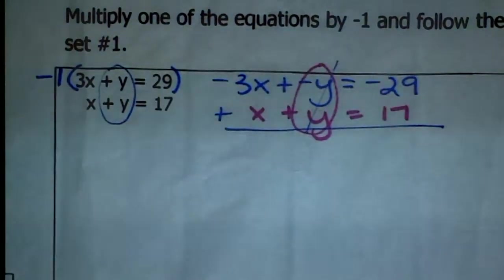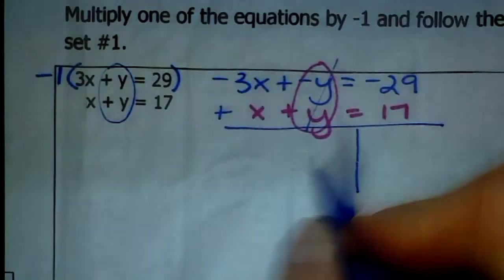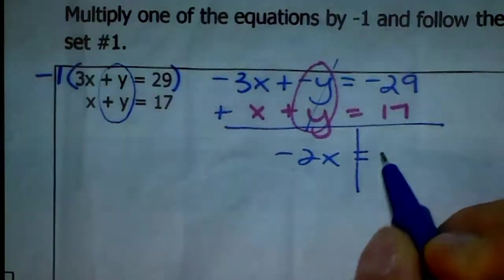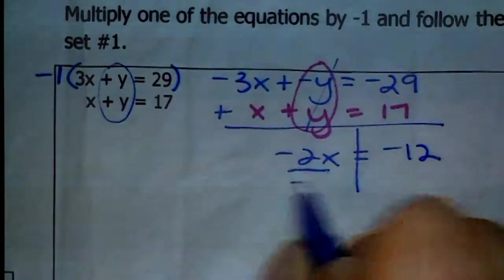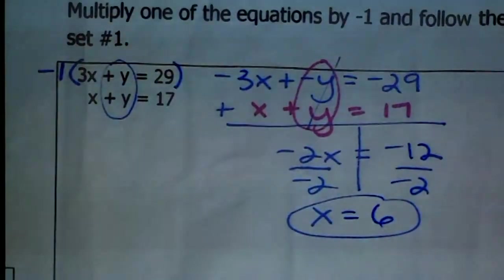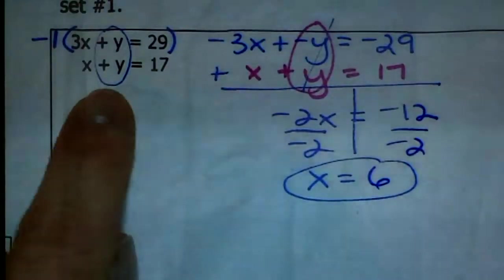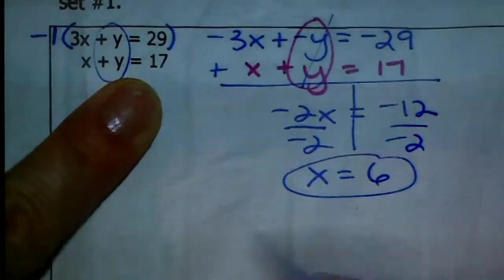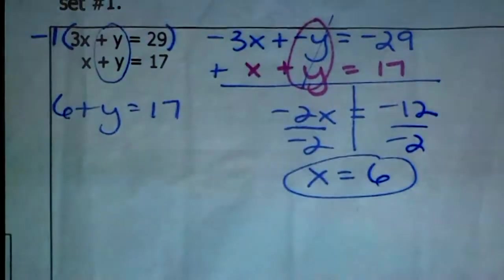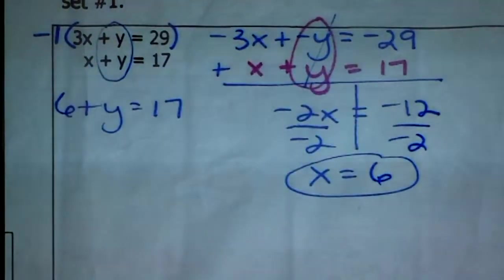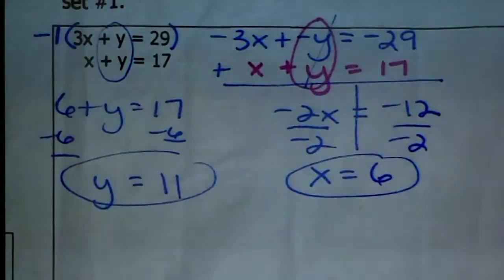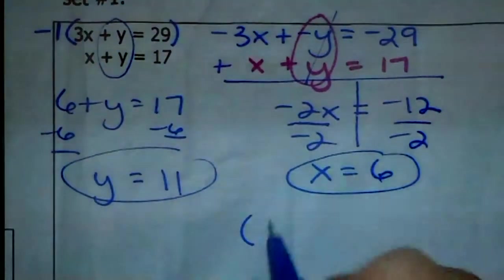Now we have the same coefficient with opposite signs, so we can add the equations. Those Y's are eliminated. Negative 3X plus X gives me negative 2X. Negative 29 plus 17 is negative 12. Divide each side by negative 2 and X equals 6. Now plug 6 into one of the equations — I'll use the second one because it's a little less complicated. X plus Y equals 17 means 6 plus Y equals 17. Subtract 6 and Y equals 11. The solution point is 6, 11 — that's where the lines would cross.